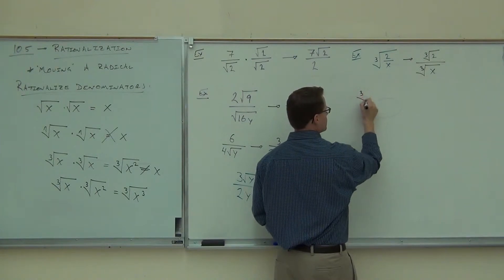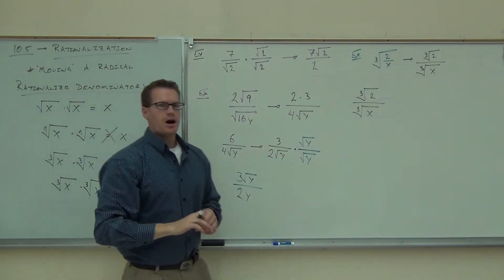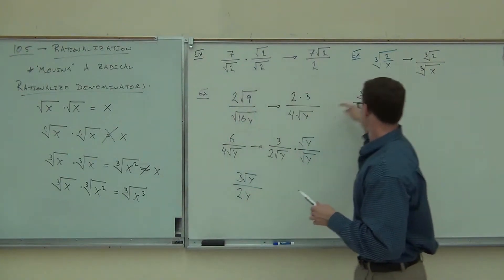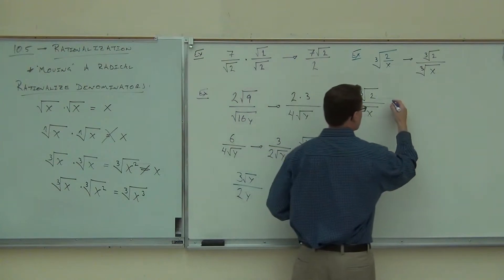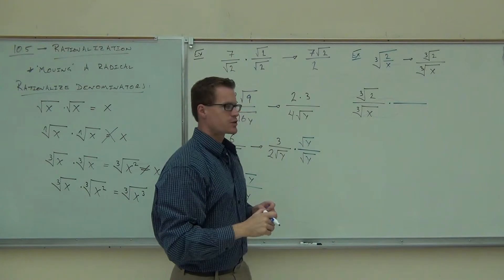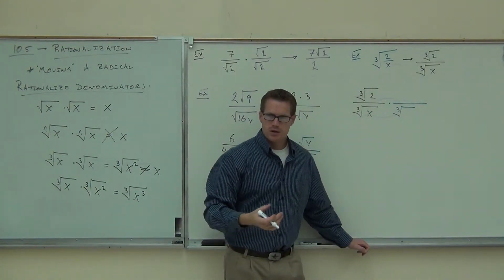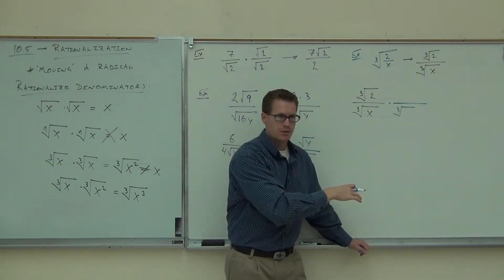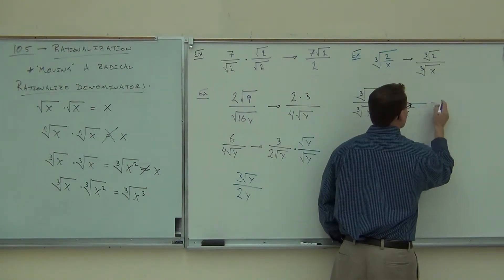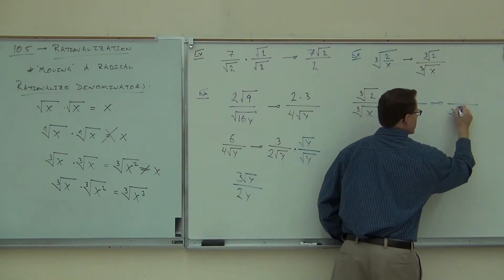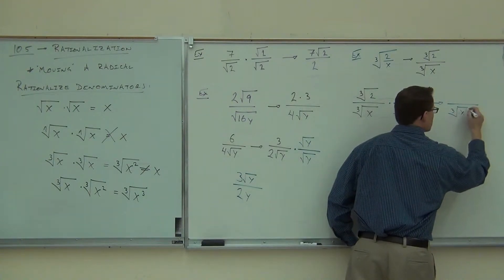I'm going to rewrite this down here — cube root of 2 over cube root of x. I'm trying to rationalize the denominator, so am I trying to get rid of the root in the numerator? No. In the denominator? Yes. I'm still going to multiply by something — that's the only way you can get rid of the root. Now, if you're not really paying attention, you might think the same thing we did before is going to work here. But no. What's going to happen is that multiplying by cube root of x would give you the cube root of x squared. Does the cube root of x squared actually simplify out of this expression? No.